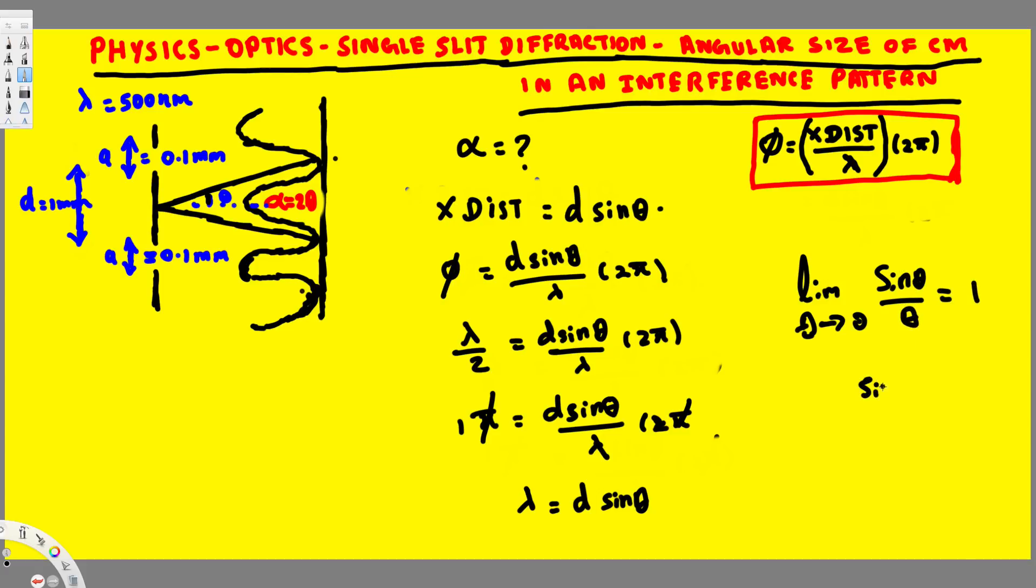So this means sin theta over theta is equal to 1. So sin theta is equal to theta. Right. So here from here we can say that lambda equals d theta.